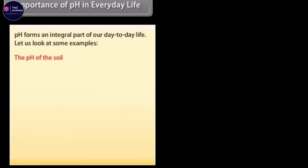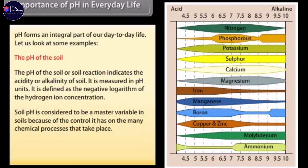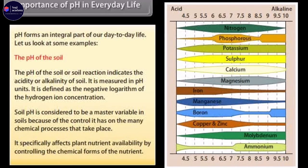The pH of the soil or soil reaction indicates the acidity or alkalinity of soil. It is measured in pH units. It is defined as the negative logarithm of the hydrogen ion concentration. With the increase in the amount of hydrogen ions in the soil, the soil pH also increases, leading to being more acidic. Soil pH is considered to be a master variable in soils because of the control it has on the many chemical processes that take place. It specifically affects plant nutrients' availability by controlling the chemical forms of the nutrient.